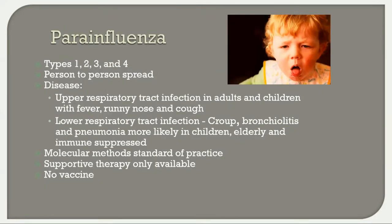Parainfluenza has four types with person-to-person spread. Upper respiratory tract infection causes a cold-like syndrome, but lower respiratory tract disease can be serious — causing croup, bronchiolitis, and pneumonia — more likely in children, the elderly, and the immune-suppressed. Molecular methods are the diagnostic test of choice. There is supportive therapy only, no specific antivirals, and no vaccine.